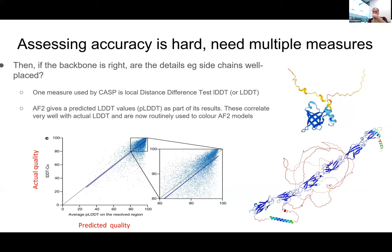The PLDDT score is computed simply by AlphaFold — it comes from the black box; there is no explicit formula. It's called PLDDT because it's a predicted LDDT — the P is for predicted. For LDDT itself we know the formula, but for PLDDT there is no formula — it's learned by the network.